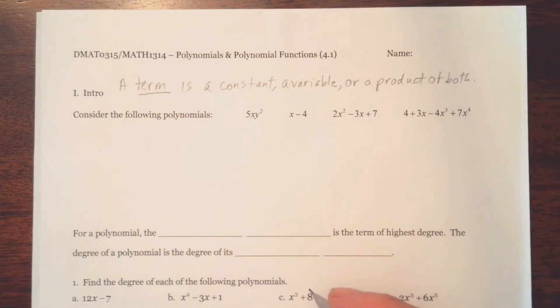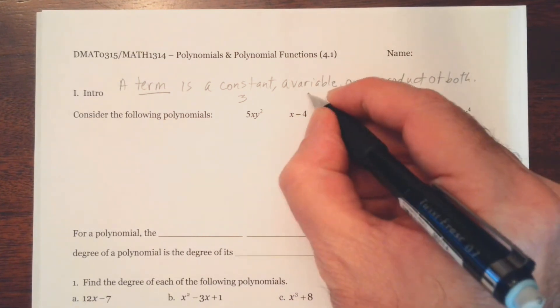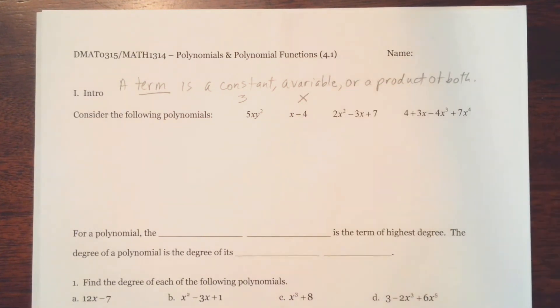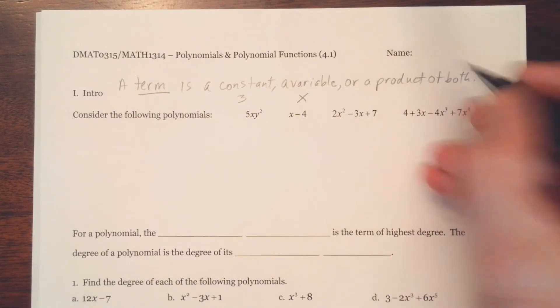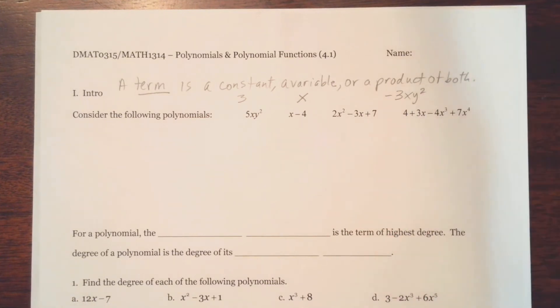Of course product means we're going to multiply. So a constant would be a number like 3. It's got a fixed value. Or variable, we normally in algebra will let x represent a value that is unknown. We call it a variable. Or a product of both, so something like negative 3xy squared. So that would be an example of a term.